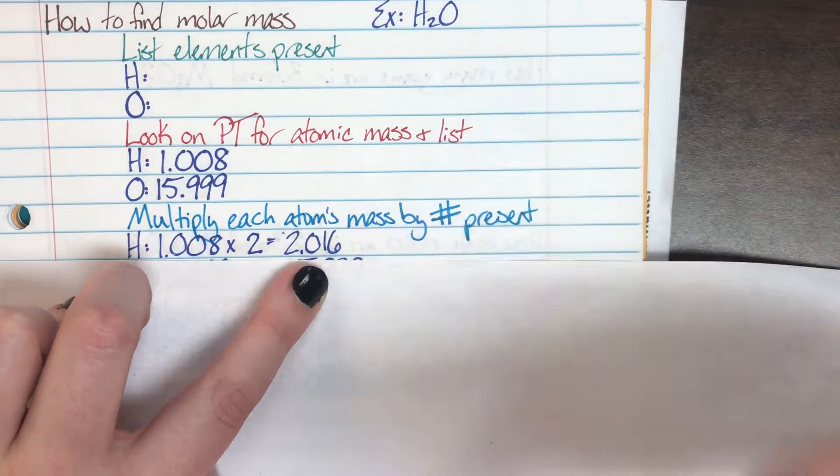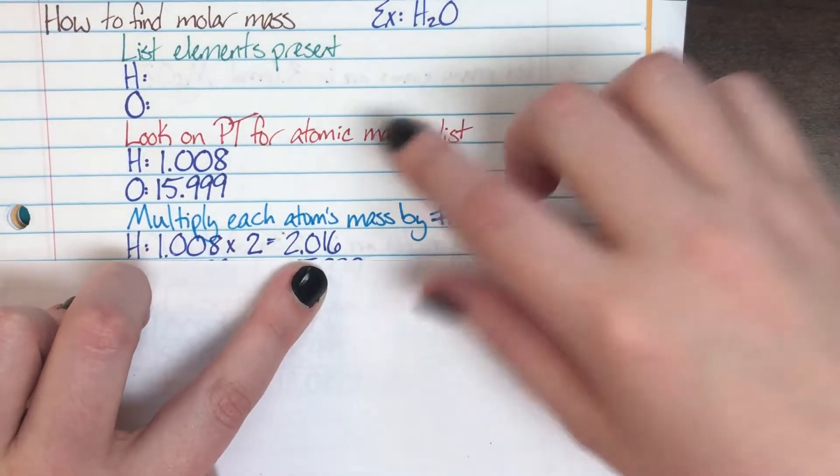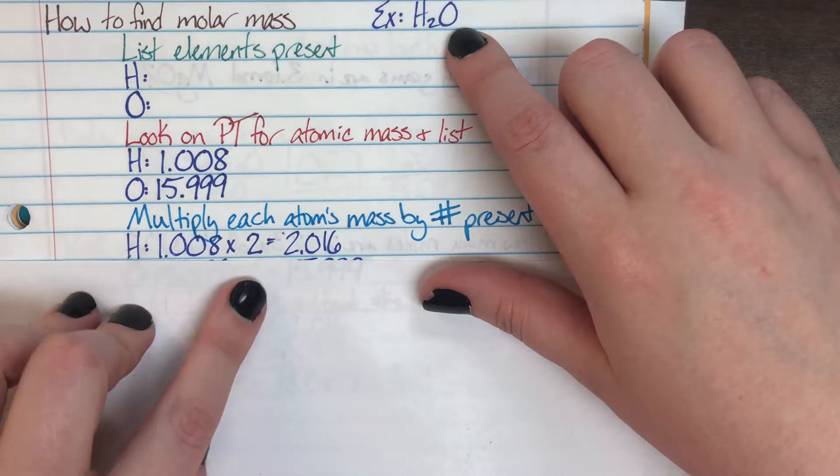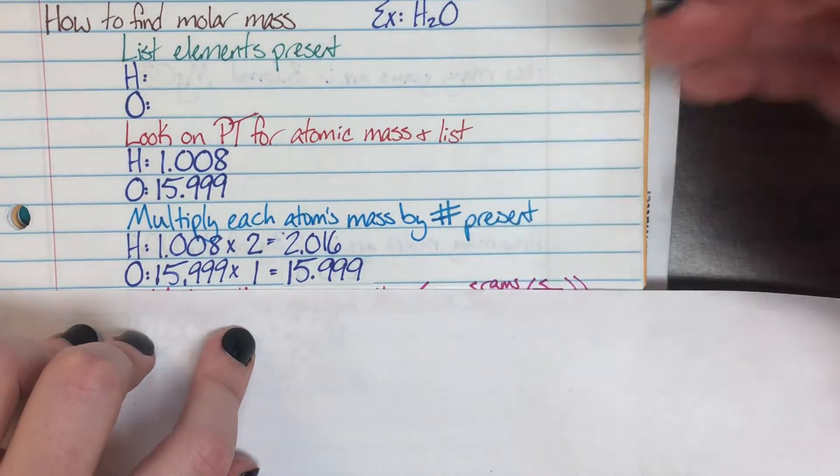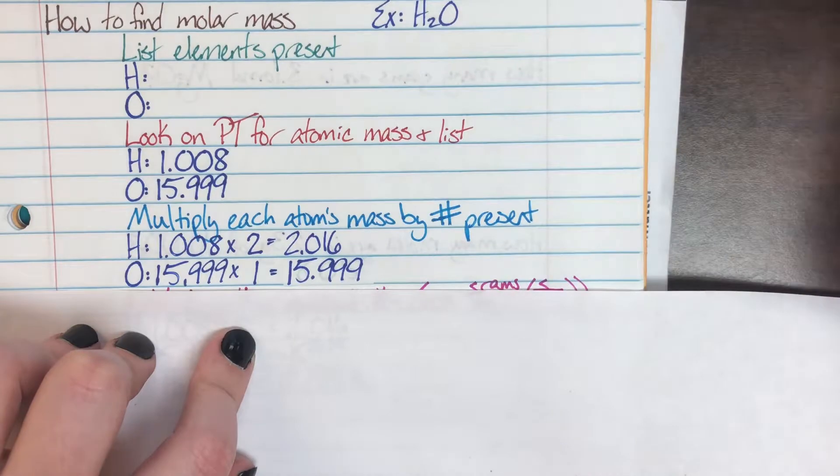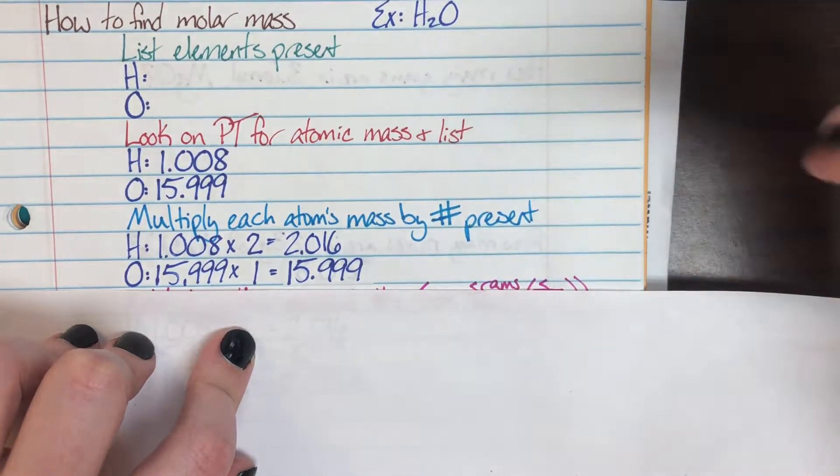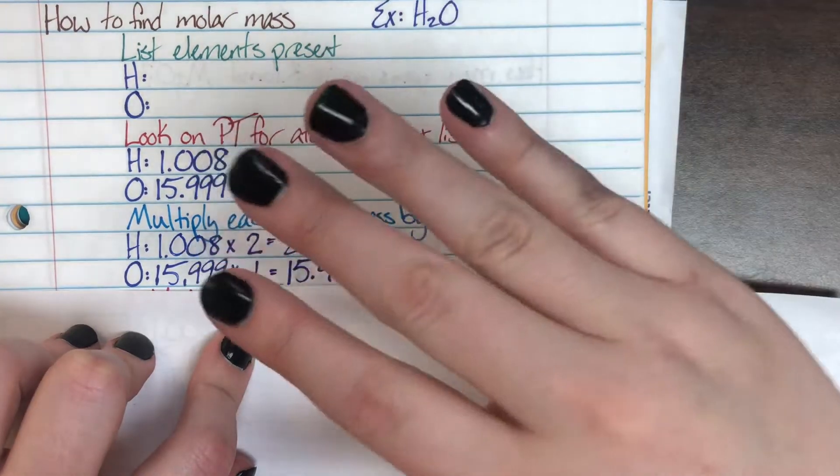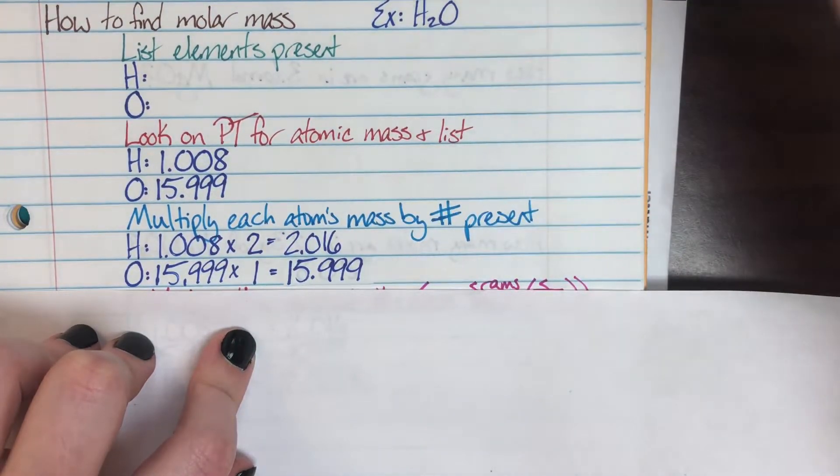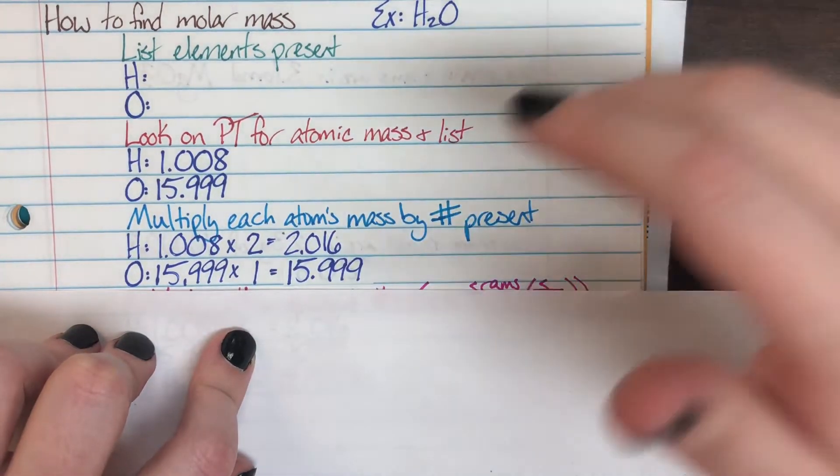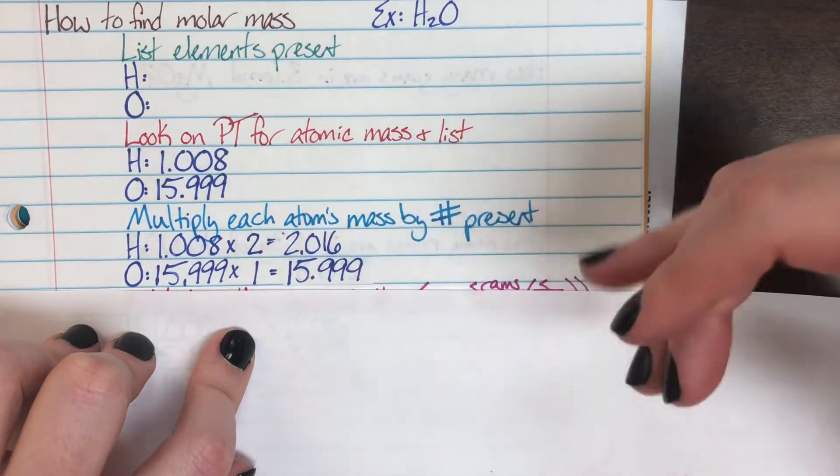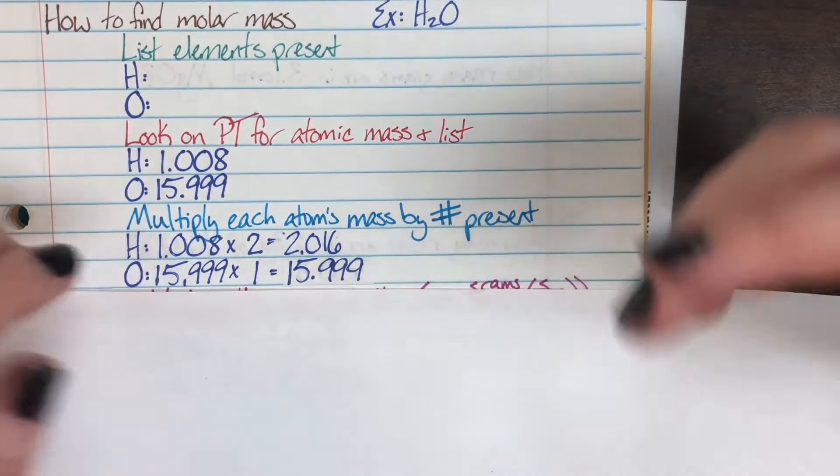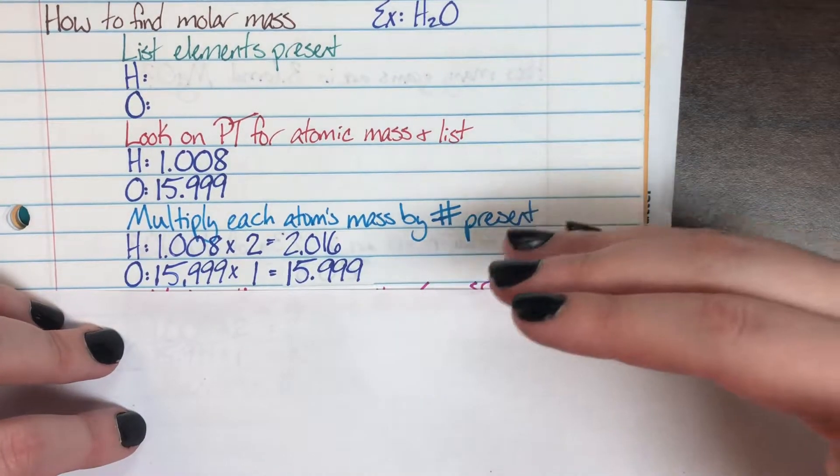Then I need to look at oxygen, figure out how many times I need to multiply oxygen by. Oxygen does not have a subscript, but remember, invisible subscripts are one, so I'm just going to go ahead and I'm going to say that I'm multiplying 15.999 by one. It doesn't actually change my number, but the good thing about writing this out is that whenever I'm looking back at this problem, I don't end up thinking that I accidentally skipped a step, or I know when I messed up. So I'm going to go ahead and I'm going to write that down.